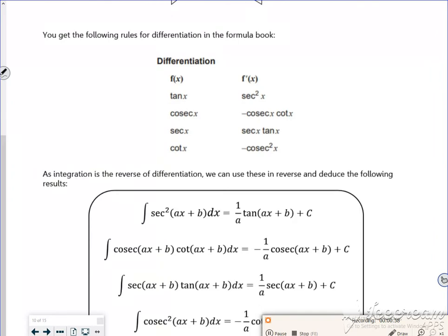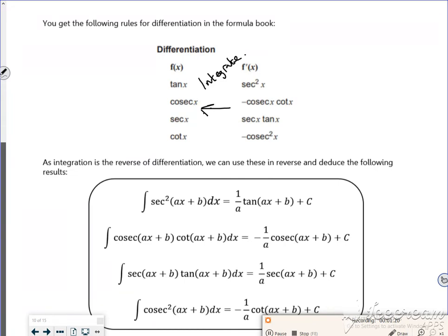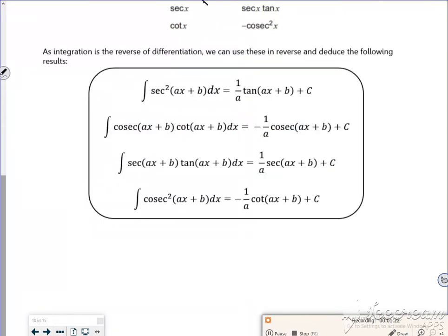What's quite nice is in your formula booklet if you know that tan differentiates to secant squared, I can integrate by going the other way. So I can integrate by reversing that process. If I integrate secant squared it goes to tan, if I integrate cosecant cot it goes to cosecant or minus cosecant and all the rest of it. But once again differentiate that second function, put it in the front if you're differentiating, but put one over it if you're integrating.